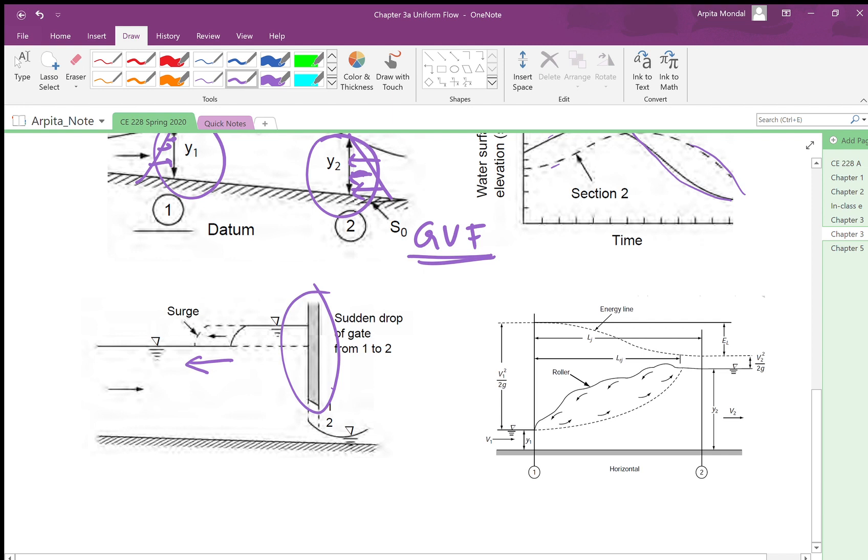If you have an opening of the gate on the other hand where flow changes from supercritical to subcritical, you may have a hydraulic jump, and the middle part here is where you see a lot of turbulence. Flow changes really rapidly and you cannot assume the hydrostatic distribution to be valid in this section.